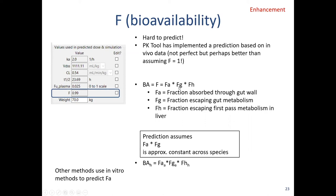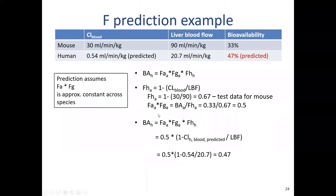Bioavailability is essentially an aggregate of the fraction absorbed through the gut wall, the fraction escaping gut metabolism, and the fraction escaping first-pass metabolism. To make a prediction for bioavailability based on animal PK, we assume that the fraction absorbed times the fraction escaping gut metabolism is constant across all species. That allows us to say that human bioavailability equals this combined fraction from the animal, multiplied by the fraction escaping first-pass metabolism in human — for which we should have an estimate since we're already estimating clearance.